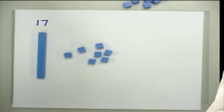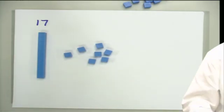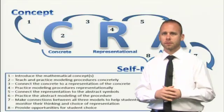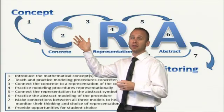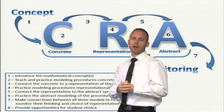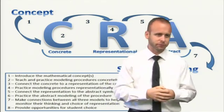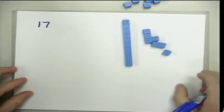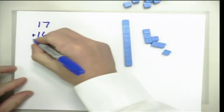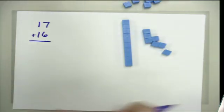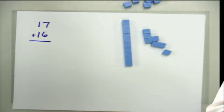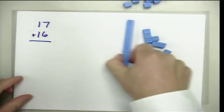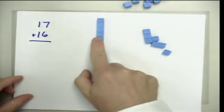That's one of the concepts we're going to need to have developed before we start into a CRA sequence of instruction. So now we're ready to begin looking concretely at how we're going to have students deal with addition. We've already shown how to model 17, and let's say we're adding the number 16 to that, so we want students to work with the problem 17 plus 16.